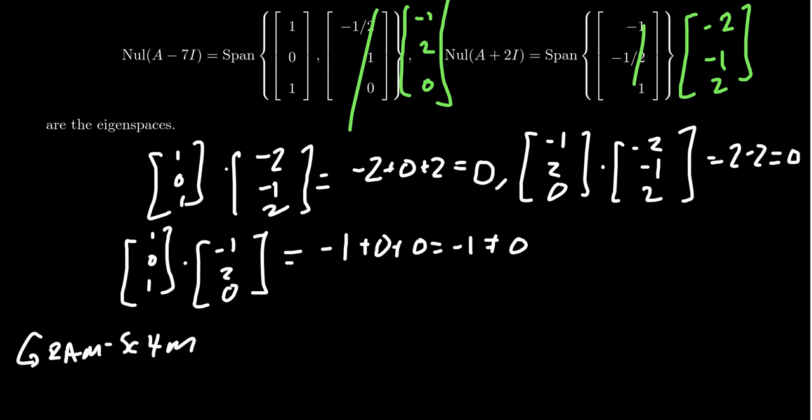And we're not going to apply the Gram-Schmidt process to the entire eigenbasis. We do have an eigenbasis in front of us. We're only going to do it just to the 7 space. And so we're going to take as our first vector, we'll just take the vector V1 to be 1, 0, 1. We don't have to change it.